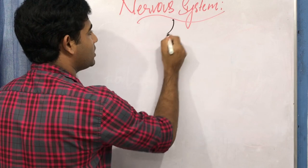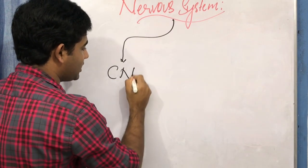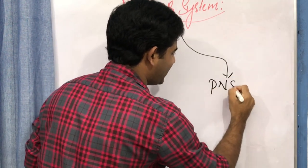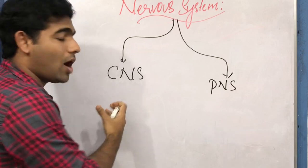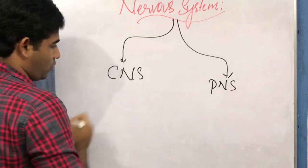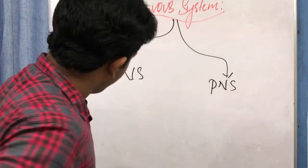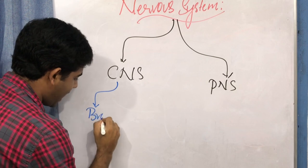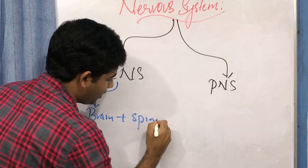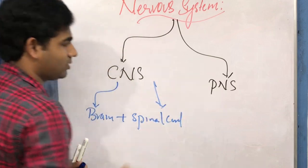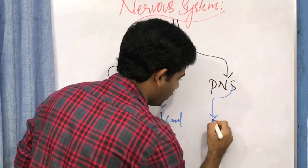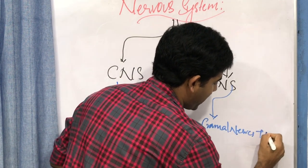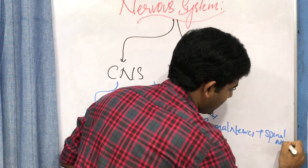The nervous system is made up of two units: the central nervous system and the peripheral nervous system. The central nervous system is made up of the brain and the spinal cord. The peripheral nervous system is made up of cranial nerves and spinal nerves.